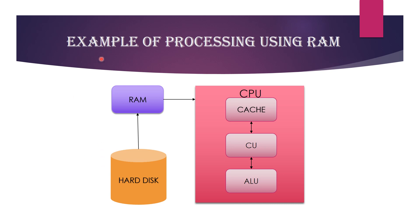Let's see an example of processing using RAM. If a user wants to open a Word document application, after installation the application is stored in the hard disk. When the user double-clicks the application, that instruction gets fetched into RAM. From RAM, the instructions go to cache memory, where the Control Unit fetches and interprets them, transforming them into signals that open the Word document application. If the user wants to perform any arithmetic operation, the Control Unit calls the ALU to perform that operation.